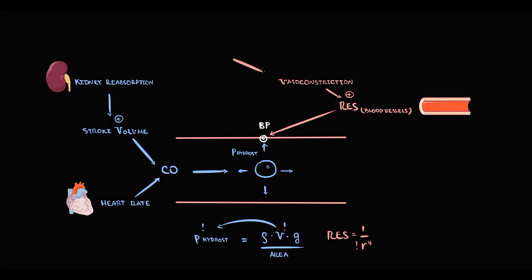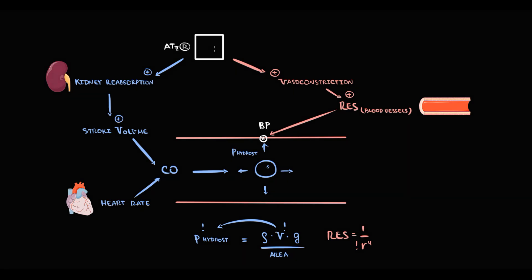Because of the huge importance of blood vessel resistance and kidney reabsorption, these two factors must be under strict regulation. The factor that regulates the state of blood vessels and fluid reabsorption by the kidneys is the renin-angiotensin-aldosterone system. The key element in this system is the angiotensin 2 receptor. Activation of this receptor by angiotensin 2 stimulates fluid reabsorption by the kidneys and contraction of blood vessels, consequently increasing blood pressure.